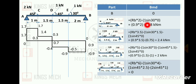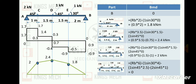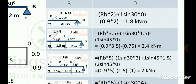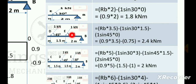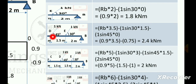The final bending moment diagram values are: 0, 2, 2.4, 1.8, and 0 kilo newton meter at successive points along the beam. These values when solved point by point give 2, 2.4, 1.8, and 0 — confirming our BMD is complete.